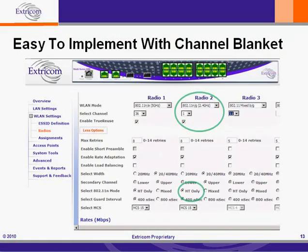Creating a pure N blanket is very easy to implement in the channel blanket architecture, as you can see from the switch configuration GUI in this slide. Radio 2 is running a 40 MHz channel blanket in the 2.4 GHz band in 802.11n HT Mode — that's the column circled in green — and you can see that HT Mode has been activated. Radio 3 uses the remaining 2.4 GHz spectrum to provide a 20 MHz channel blanket for legacy B/G users.